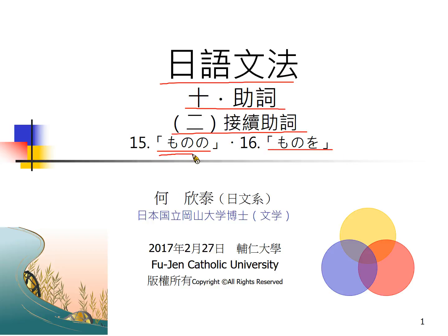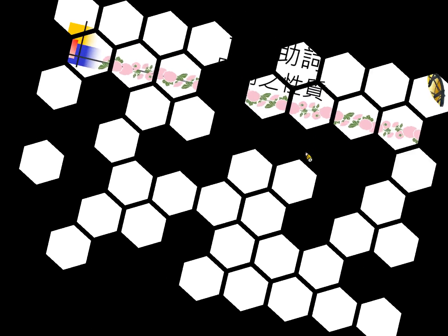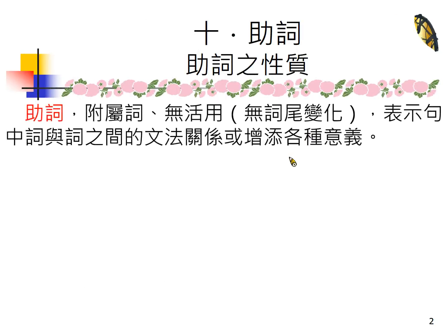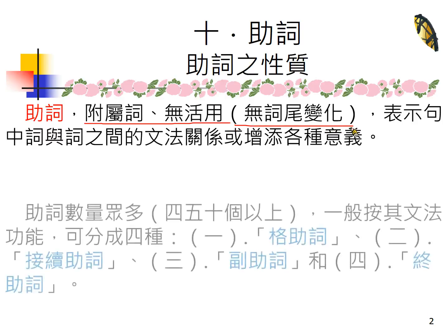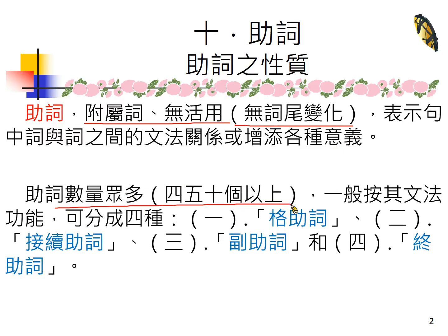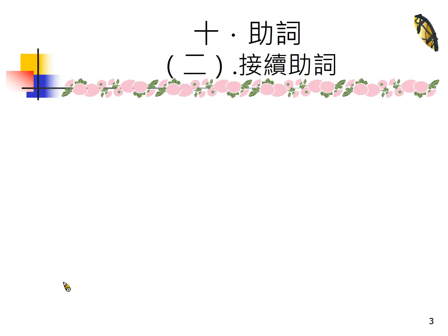ものの跟ものを都是mono开头，所以当成接续名词的方式来接它就好了。助词的性质，它是附属词，没有活用，也就是不像用言会有词汇变化。数量很多，大概几十个，一般我们分四种：格助词、接续助词（现在我们在讲的）、瞬间跟逆接，还有副助词，跟最后的终助词。终助词最具代表性的就是よ、ね、的，比如そうですね、いいですね、危ないですよ，这都是终助词。